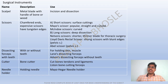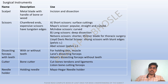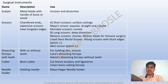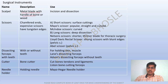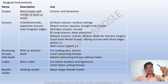Different surgical instruments and their names are very important. The scalpel has a metal blade with a handle of bone or plastic and is used for incision and dissection.